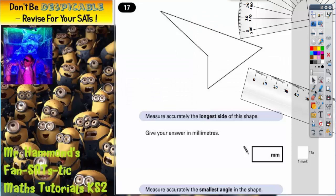Question 17. We've got a shape and we've got to measure accurately the longest side of the shape. Give your answer in millimeters.